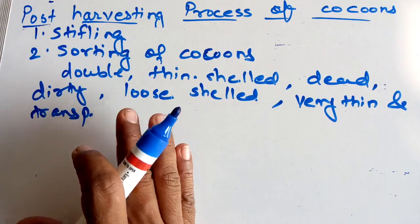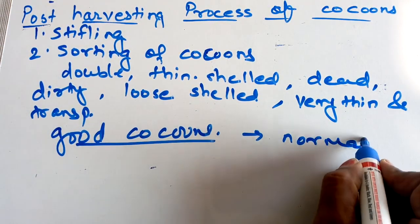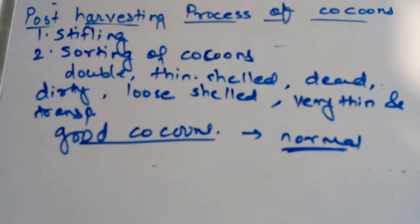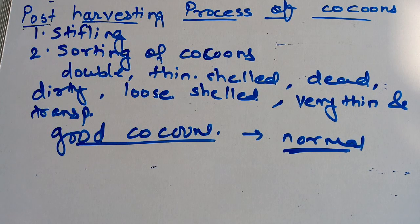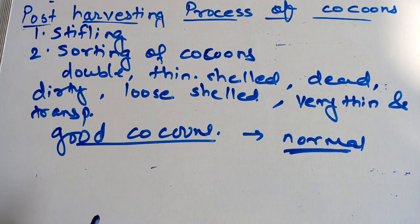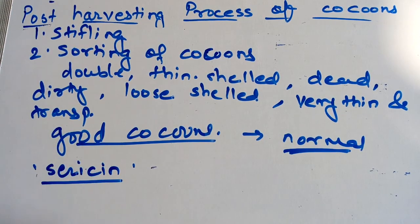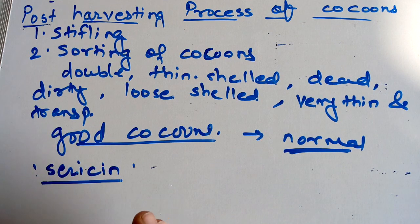We select only the good cocoons and call them normal cocoons. The color of the cocoon commonly depends on the silkworm strain raised in the sericulture unit. There are certain different colors — for example, golden yellow, flesh yellow, crimson, bamboo leaf color, and green color. The color pigment of the cocoon is present particularly in the sericin, which is a type of protein present in the silk, as discussed in the last video.